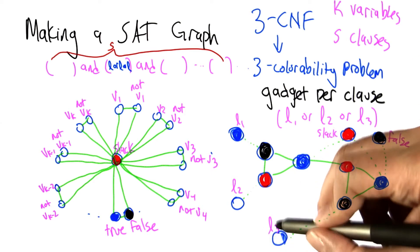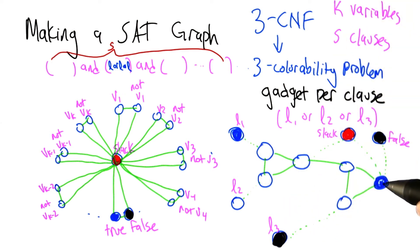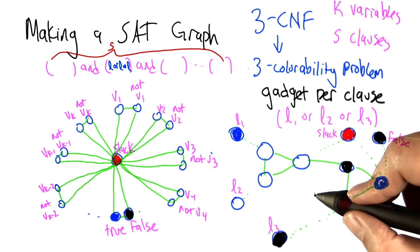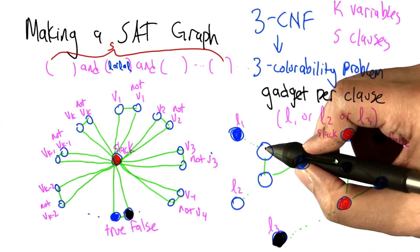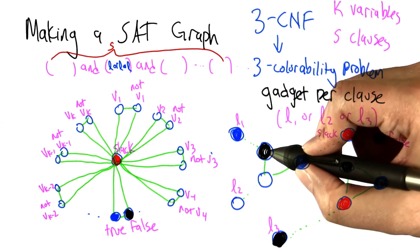So let's consider the case where this one's black and one of the other guys is blue. So this one's forced to be blue. Since this one's black and this one's blue, this one's forced to be red, which means this one's forced to be black, which means this one's forced to be blue.